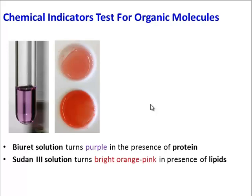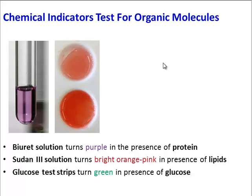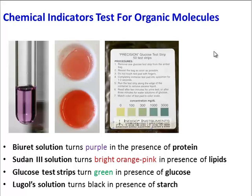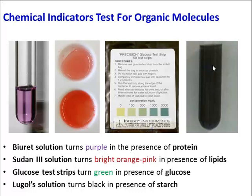The next indicator we're going to use is called Sudan III. This solution is tricky — it's normally a dull pink, but in the presence of lipids it'll turn a nice, bright, orangey pink. We'll also use glucose test strips, which turn green in the presence of glucose — we used those in our urinalysis lab. And finally, we're going to use Lugol's solution, which turns black in the presence of starch.